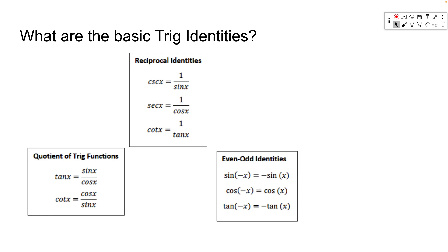There are even and odd identities. Sine of negative x equals negative sine of x — the negative inside is a reflection around the y-axis, the negative outside reflects about the x-axis, and those two reflections give the same curve. For cosine, cosine of negative x equals cosine of x — flipping it over the y-axis gives the same curve because it's symmetric. Cosine is an even function; sine and tangent are odd functions.